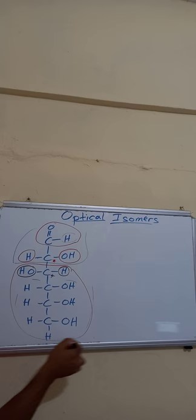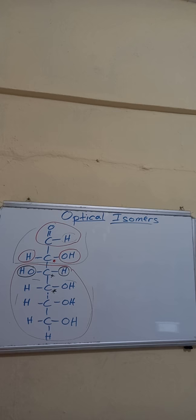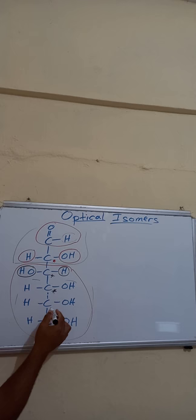If you come to this carbon: OH — that's two groups. Below it is a group, and above it is a group, and the group above it is not the same as below. So this molecule actually has four chiral carbons.